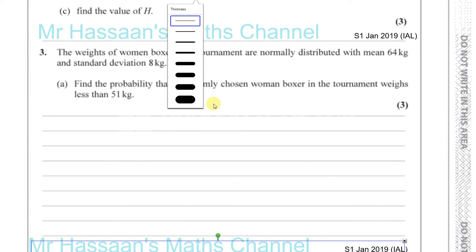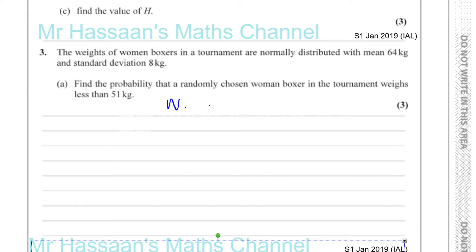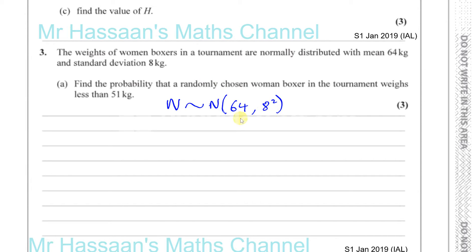We know that the weight is normally distributed with a mean of 64 and a standard deviation of 8. The variance, which is the square of the standard deviation, is written in the standard way as 64. The question says: find the probability that a randomly chosen woman boxer in the tournament weighs less than 51 kilograms.